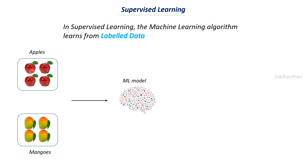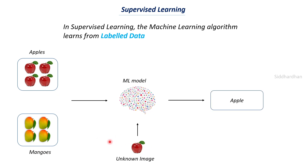The model tries to find patterns between the images. For example, it can understand that if the fruit is red it may represent an apple, and if the fruit is yellow it may represent a mango. It tries to find all the features and patterns in those images, and once it has learned, when you give it a new unknown image it can tell you whether that image represents an apple or a mango. This is why it is called supervised learning — we are supervising the machine through labels.